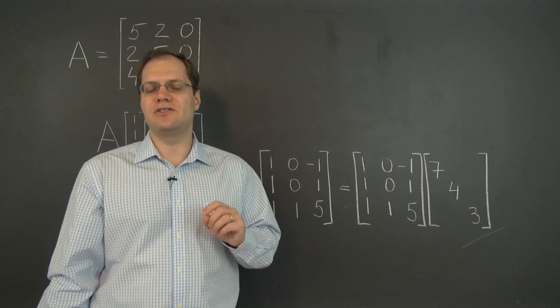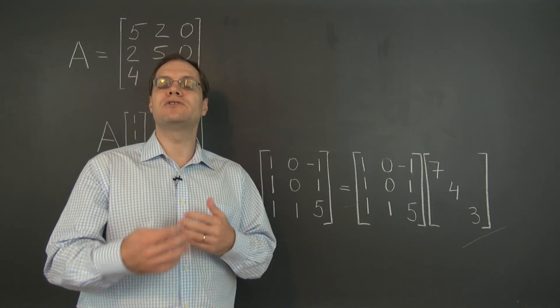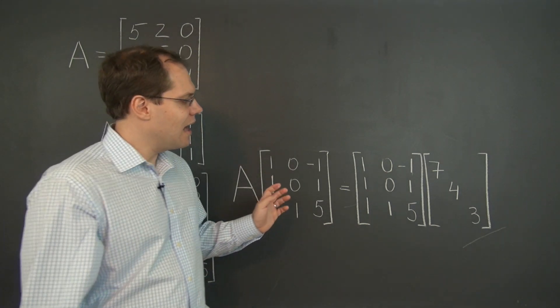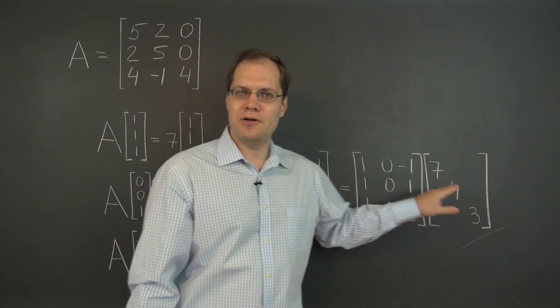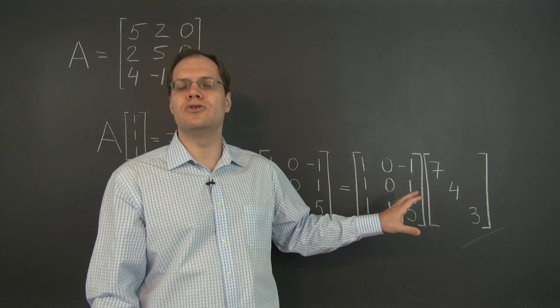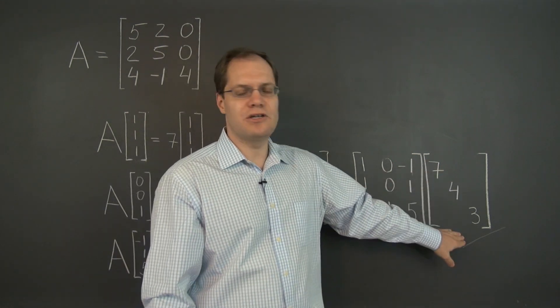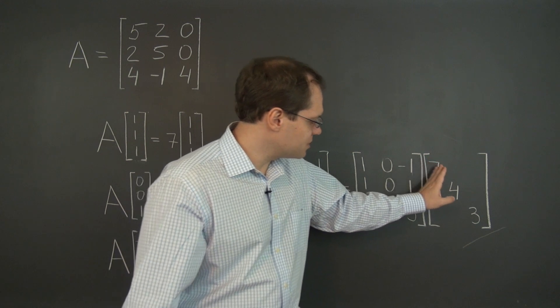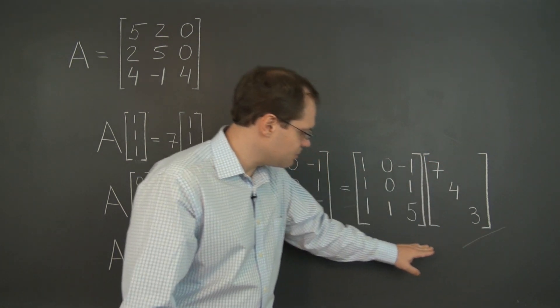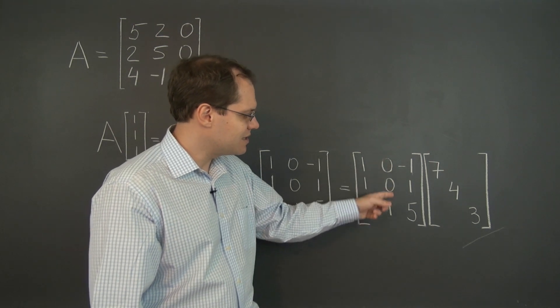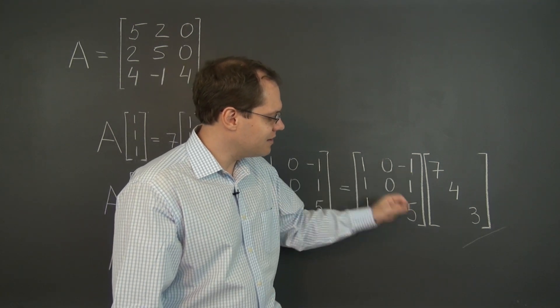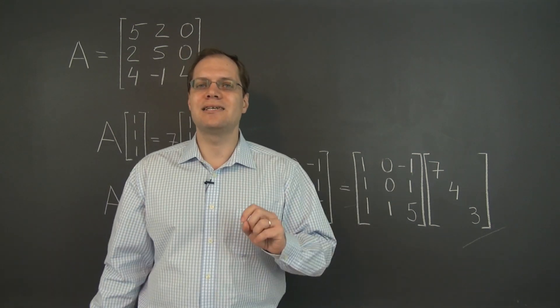So because we're multiplying columns, I had to put what ended up being an elementary matrix on the right. If I put it on the left, it would do something to the rows. So I had to put it on the right. And the interpretation of this elementary matrix coming from the right is that it multiplies the first column by seven, the second column by four, and the last column by three. And that's exactly what we want.